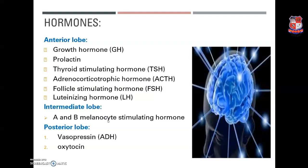The hormones categorized under the three lobes of the pituitary gland are: the anterior lobe — growth hormone, prolactin, thyroid stimulating hormone, adrenocorticotropic hormone, follicle stimulating hormone, and luteinizing hormone. The intermediate lobe — melanocyte stimulating hormone (alpha and beta types). The posterior lobe — vasopressin and oxytocin.